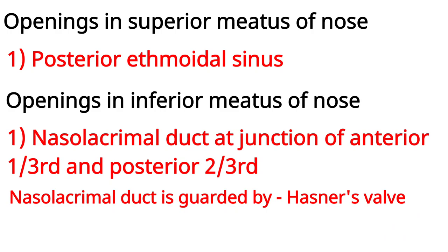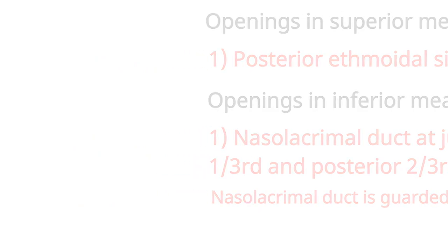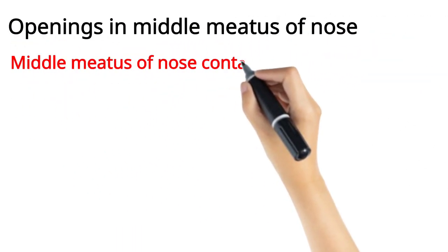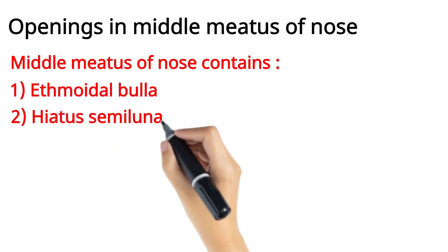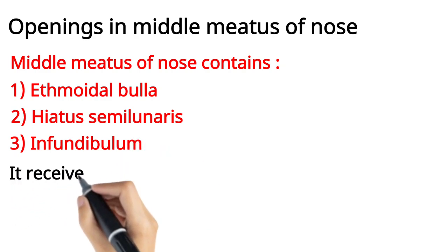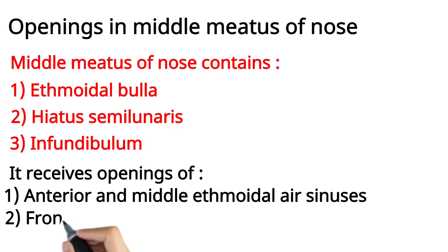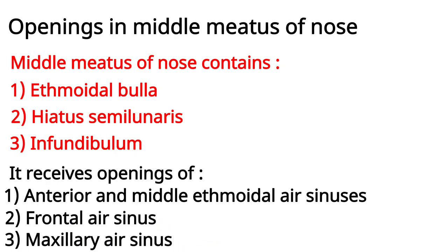Out of the three meatuses, the middle meatus receives the maximum openings. The inferior meatus receives a different opening apart from the paranasal sinuses — it receives the opening of the nasolacrimal duct. The nasolacrimal duct carries tears from the lacrimal apparatus and opens into the inferior meatus at the junction of its posterior two-thirds and anterior one-third. The opening of the nasolacrimal duct in the inferior meatus is guarded by a valve known as Hasner's valve.